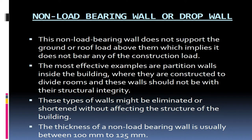Non-load-bearing wall or drop wall. This non-load-bearing wall does not support the ground or roof load above them, which implies it does not bear any of the construction load. The most effective examples are partition walls inside the building, where they are constructed to divide rooms. These walls should not compromise their structural integrity and might be eliminated or shortened without affecting the structure of the building. The thickness of a non-load-bearing wall is usually between 100 mm to 125 mm.